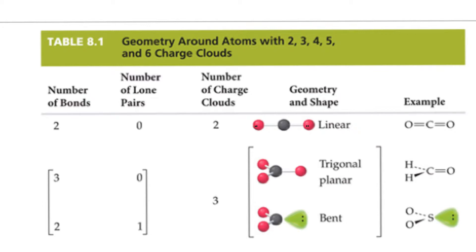Notice that you've got two kinds of geometries: the electron domain geometry, which shows all the groups of electrons around the central atom, and the molecular geometry, which describes the molecule looking only at the atoms. When we have three electron domains — three charge clouds around a central atom — if all three are bonds, they get away from each other as much as possible, giving 120-degree angles all on the same plane. This is called trigonal planar: trigonal like triangle, planar because they're all in one plane.